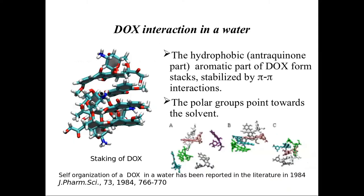We started by investigating doxorubicin in water — how the drug behaves and whether we may see some intermolecular interactions between the drug molecules. For this purpose, we set up a simple system containing six drug molecules placed randomly in a box, ran the simulation, and found that at some point small aggregates of dimers and trimers started to form.